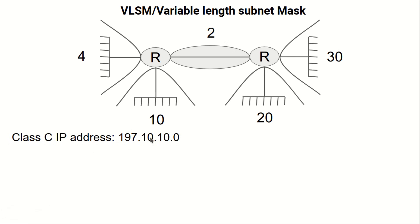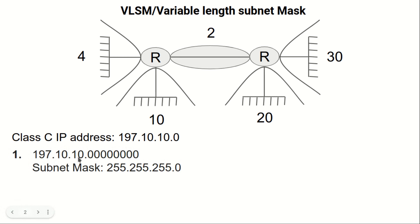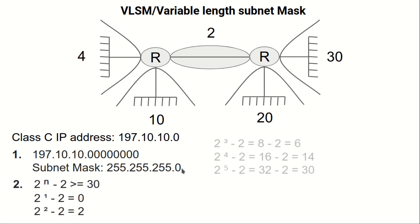Let's take the Class C IP address: 197.10.10.0. The first step is to write this IP address in binary — each of the four octets contains 8 binary numbers, giving 8-8-8-8 bits. The subnet mask of this Class C IP address is 255.255.255.0. Now let's move to the second step and do some mathematical calculation using this IP address.